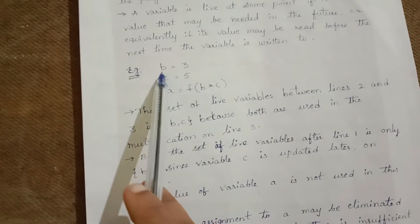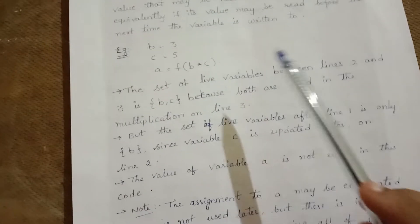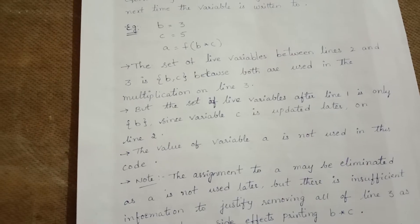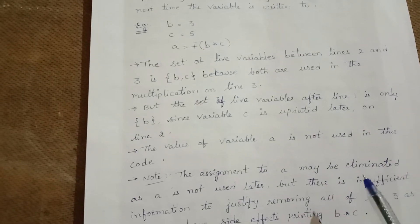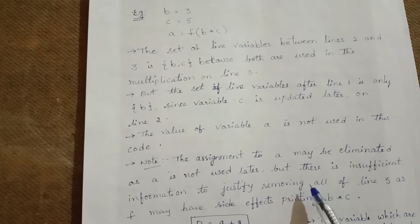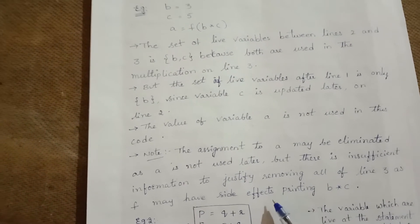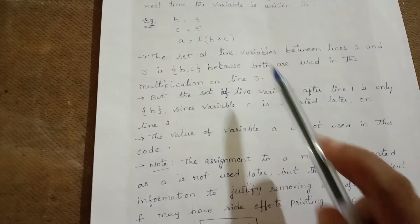The value of variable a is not used in the code. The assignment to a may be eliminated as a is not used later, but there is insufficient information to justify removing all of line 3, as f may have side effects printing b × c.